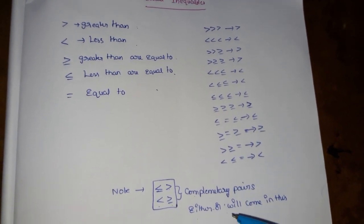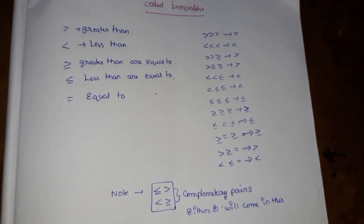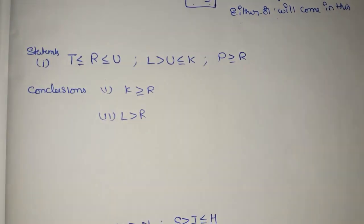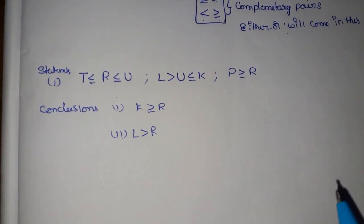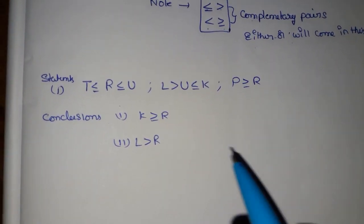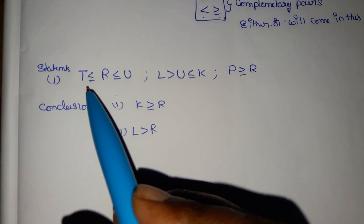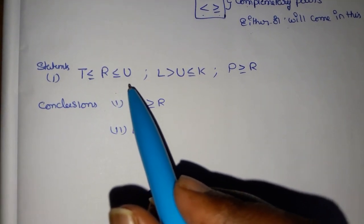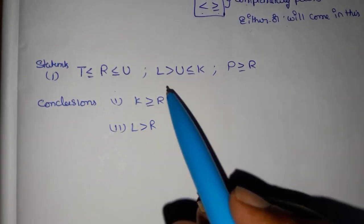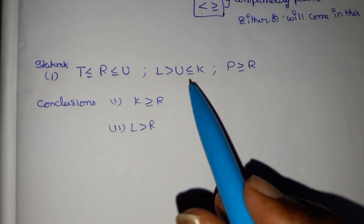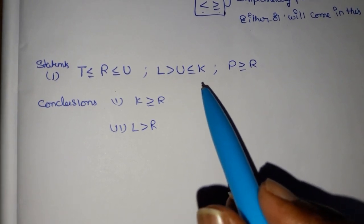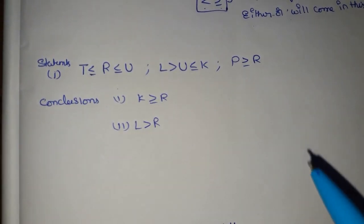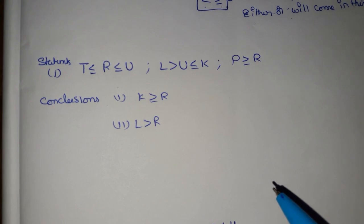If we show variables: less than or equal to, less than or equal to, less than or equal to, less than or equal to, less than or equal to. P greater than or equal to — check the conclusions.